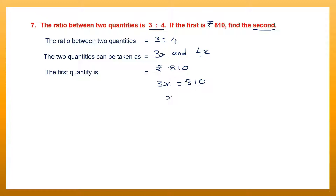So 3x will be equal to 810. We can find out what x is. On the left hand side we have 3x, which means 3 into x. I'm going to move 3 from the left hand side to the right hand side — transpose it. Multiplication on the left hand side now becomes division.